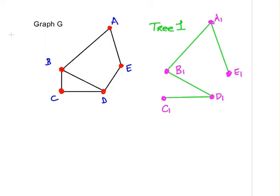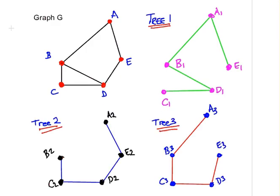We're going to show two more possible spanning trees of graph G. We have spanning tree two and spanning tree three down here at the bottom. These two new spanning trees are isomorphic to tree one. I'm going to demonstrate the correspondence by using the vertices.